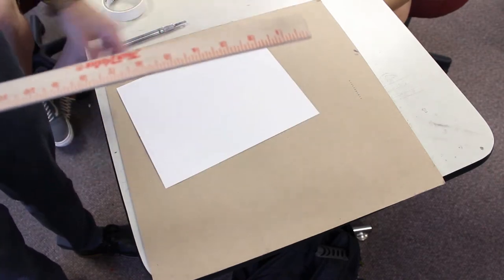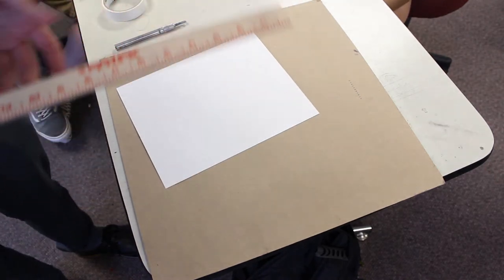So what you do, the first thing you do is you just measure your paper, and this one is 9 by 11. So I know that I need to add six inches to the side, right? So that's like 15 by 17.